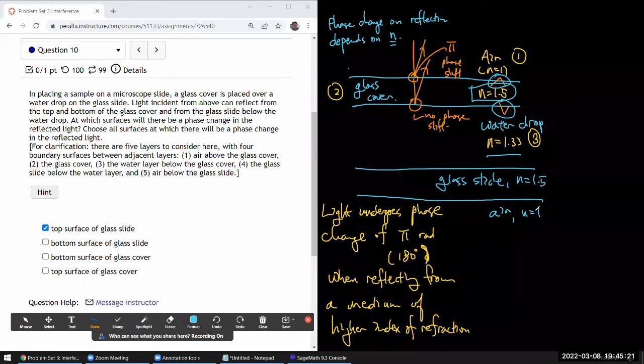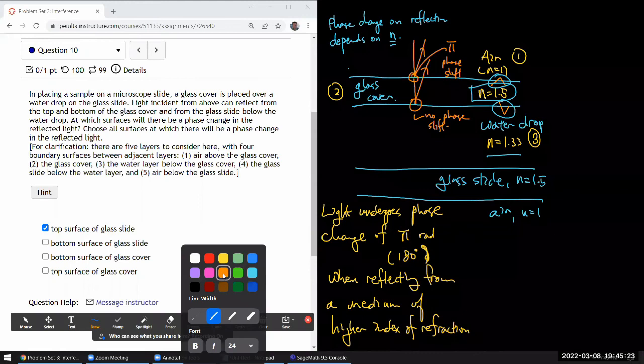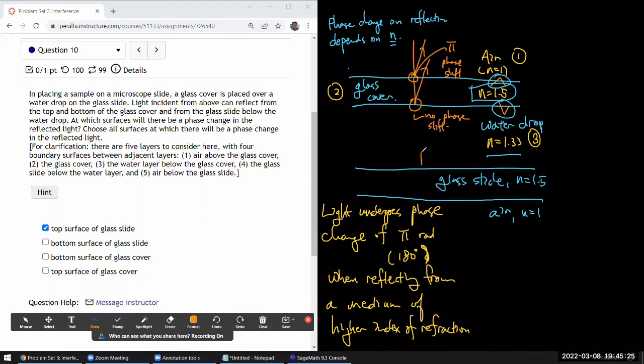So top surface of glass slide. That would be referring to this reflection here. And I'm going from the lower index of refraction to higher index of refraction. Okay. There should be a phase change. Bottom surface of glass slide. You are going from the higher index of refraction to lower index of refraction. So, or that's the boundary you are reflecting from. So there shouldn't be any phase shift.